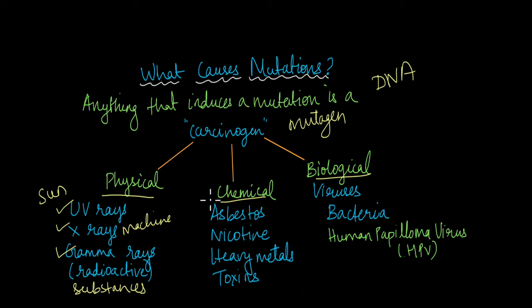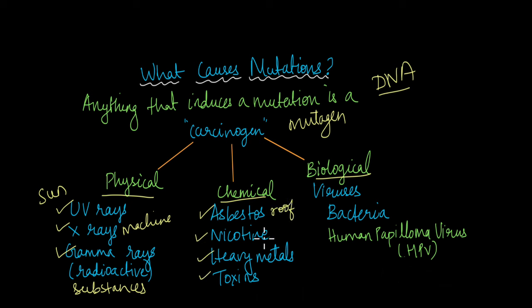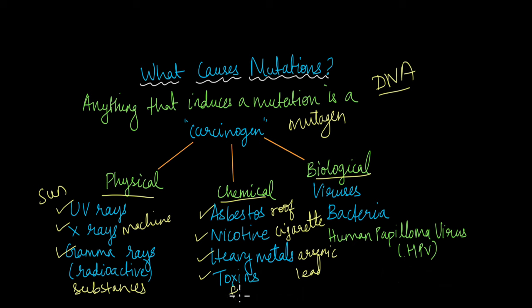Chemical carcinogens are any chemical that can induce DNA damage, like asbestos, nicotine, heavy metals, and toxins. Asbestos from the roofing materials we use, nicotine mainly from cigarettes, heavy metals like arsenic and lead, and a lot of toxins secreted by some fungi — they are all types of chemical carcinogens that can cause cancer.